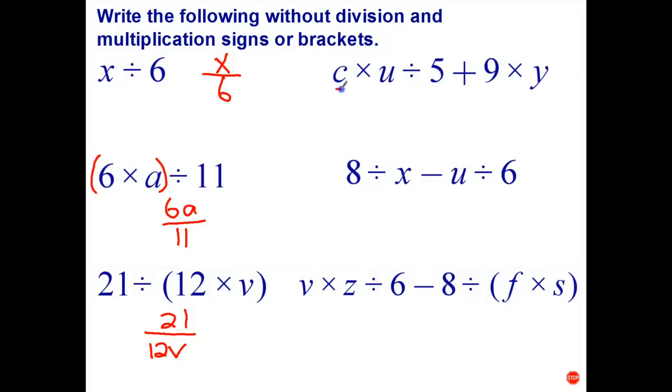We've got to use our order of operations on this one. We've got two terms, so we can rewrite each of those. c times u divide 5 just becomes cu over 5, and then we write the plus sign, and then 9 times y is just 9y.